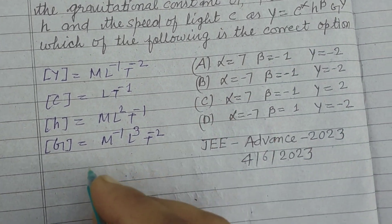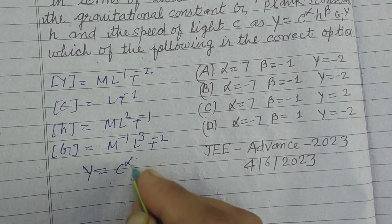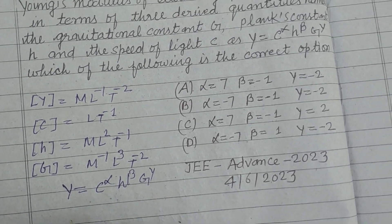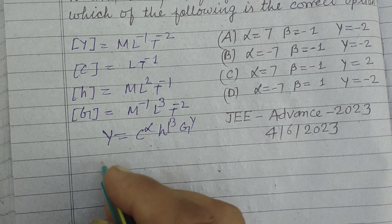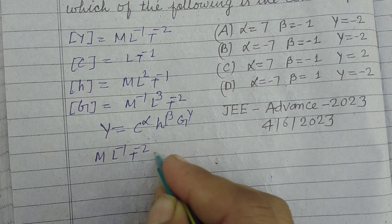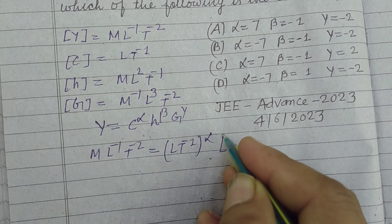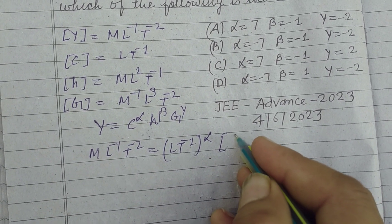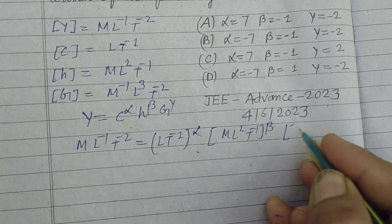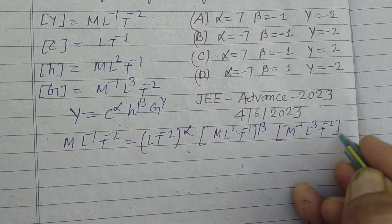Now taking the equation Y equal to C to the power alpha, H to the power beta, and G to the power gamma, and writing dimensions on both sides: ML⁻¹T⁻² equals (LT⁻¹)^alpha times (ML²T⁻¹)^beta times (M⁻¹L³T⁻²)^gamma.